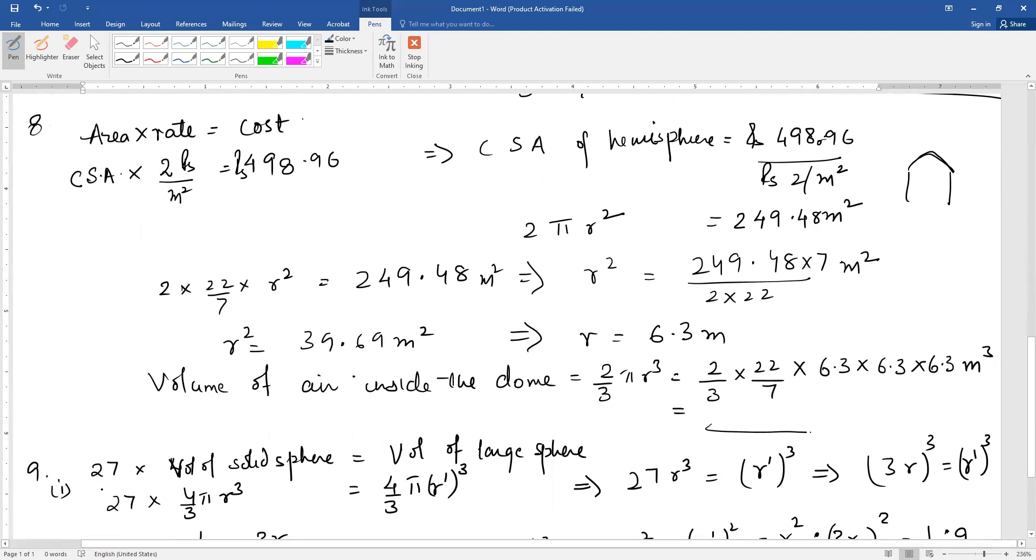This means the 27 spheres, volume of one solid sphere into 27. When melted and made into one large new sphere, its volume should equal. These two must be equal.